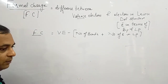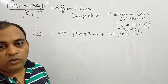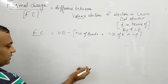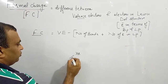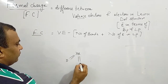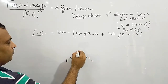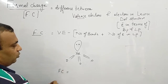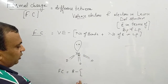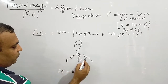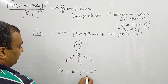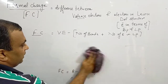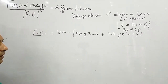Now let us take one more example for more clarity on formal charge. If we take the structure of XeO3, then xenon has 8 valence electrons minus 6 bonds plus 2 electrons in lone pair. So again the formal charge is 0. Calculating the formal charge is not a big deal.